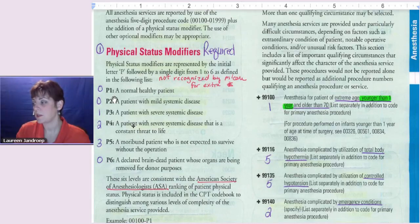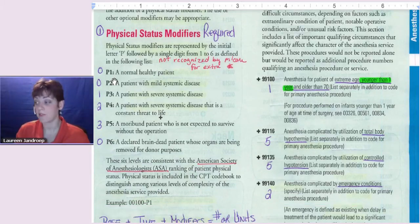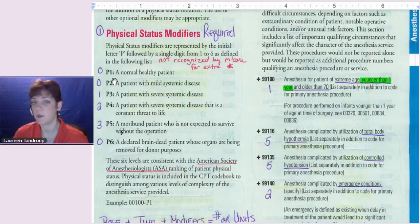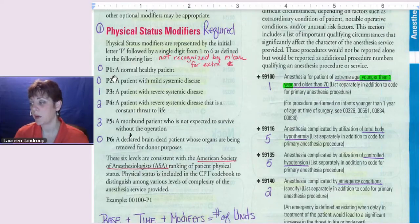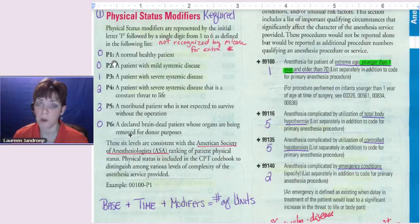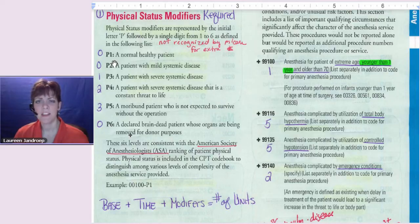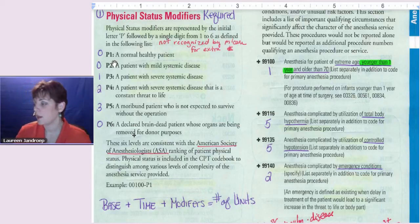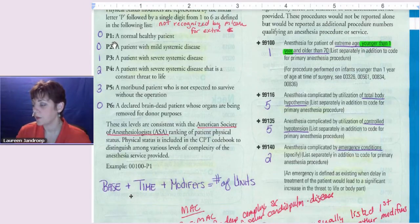P4, a patient with severe systemic disease that is a constant threat to life. Now it's really bumping up two points. P5, moribund, that means death-bound patient who is not expected to survive without the operation. So very important one there. And then P6, a declared brain-dead patient whose organs are being removed for donor purposes. So I had a student long ago ask me, do they keep them anesthetized because they're not sure if they still feel pain? I'm like, no, it's not that. It's about the health of the organs until they get harvested. So that's why the risk is zero.